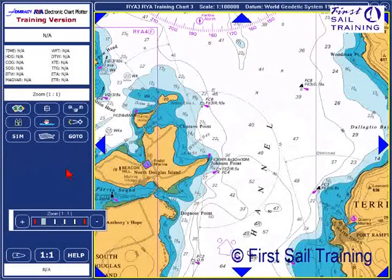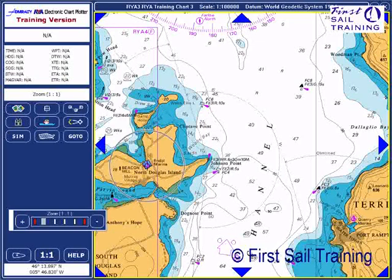We also have the reciprocal bearing, which is from the Black Shawl isolated danger mark to the NAMLE bar beacon: 039 degrees true. We'll now have a look at the multi-point measuring tool. I want to measure the distance between Key Marina down here in Port Rampton and Endall Marina on North Douglas Island using the shortest safe route.